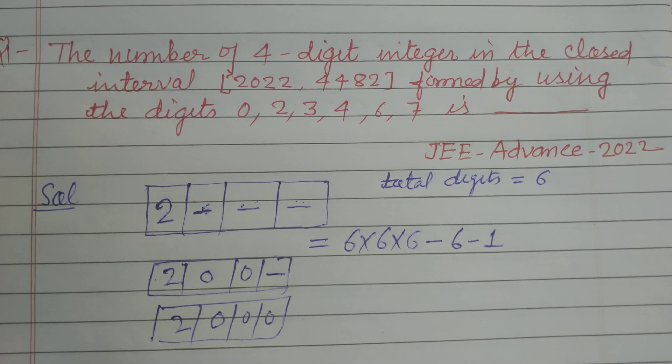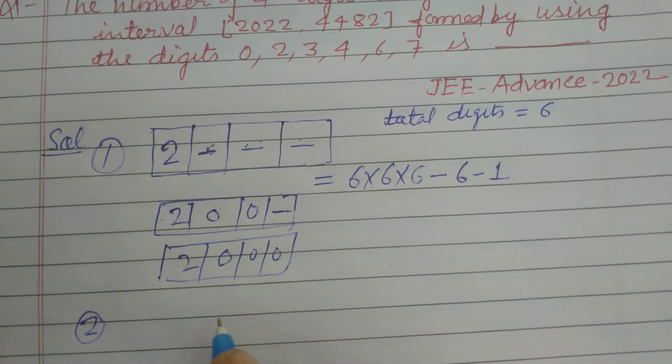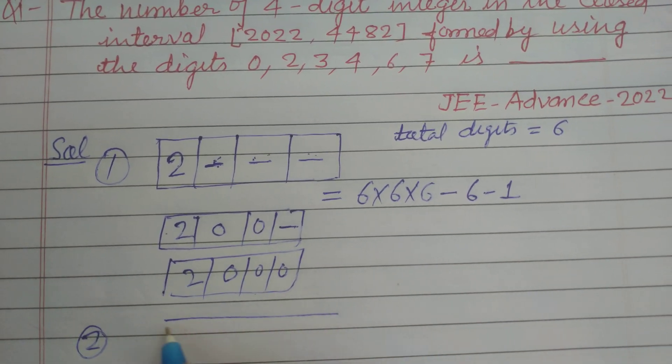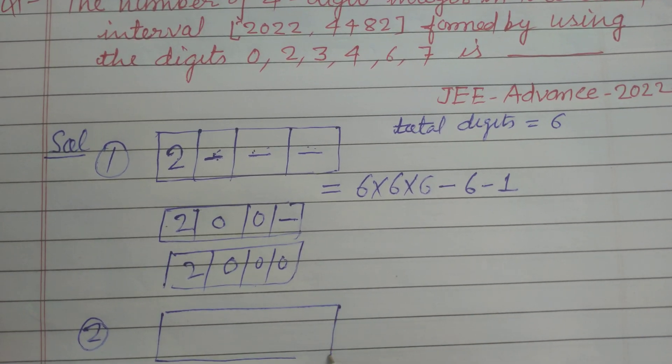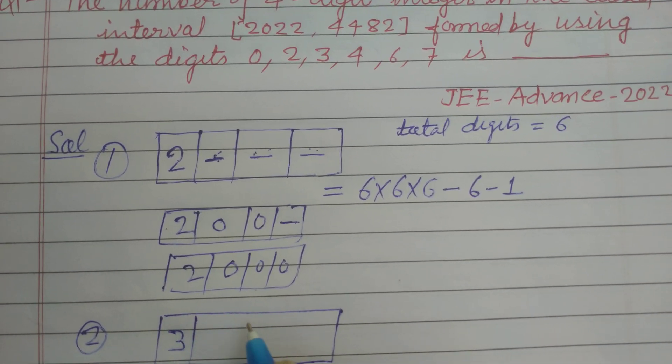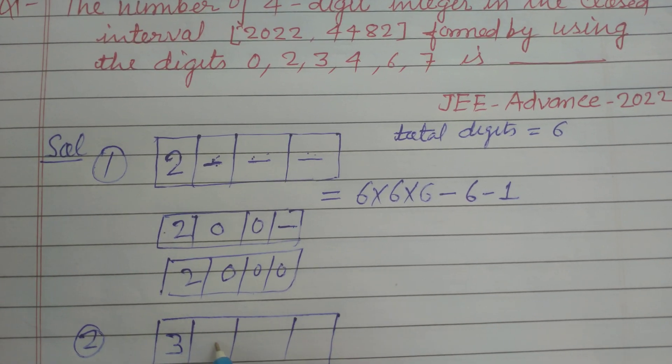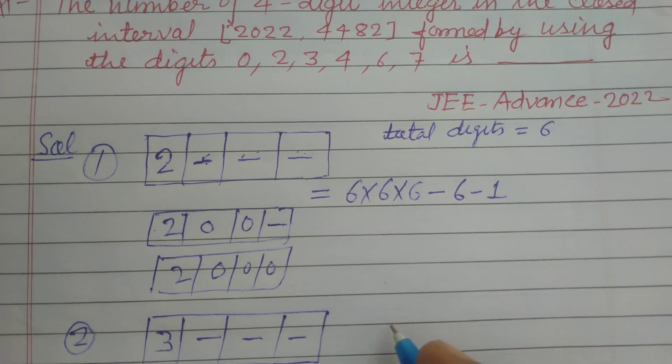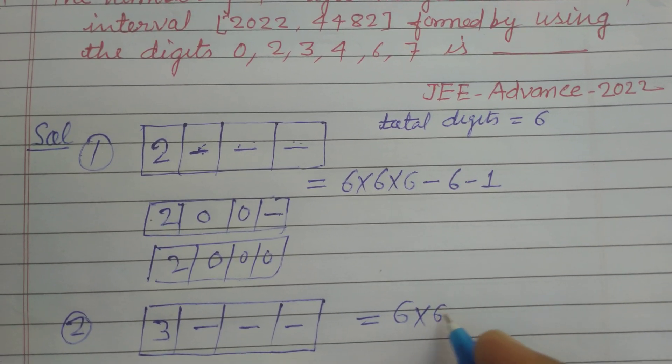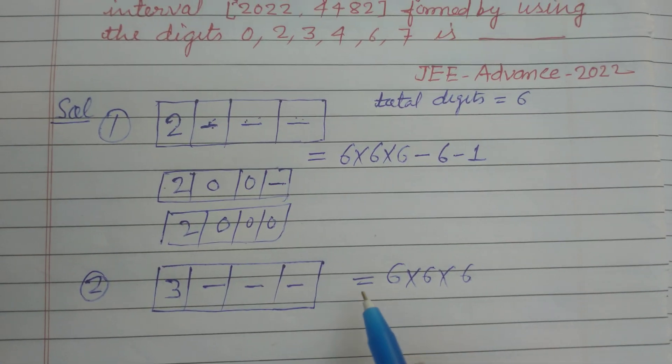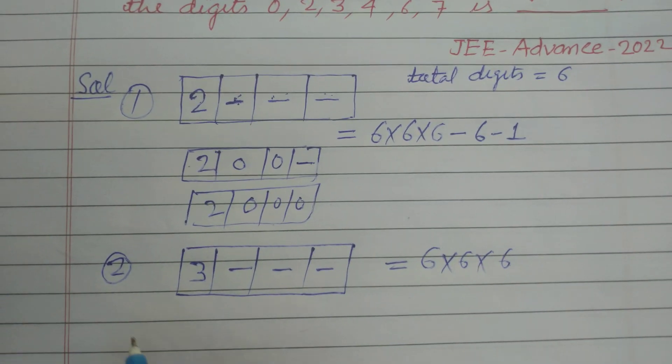Now the second condition is, this is our first condition. The second condition is if we put 3 at 1000 place, then these 3 vacant can be filled by 6, 6, 6 ways.